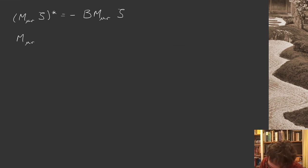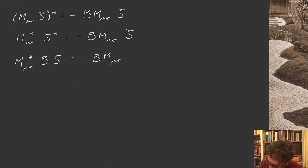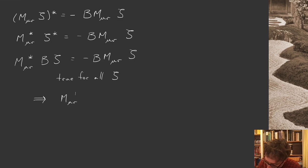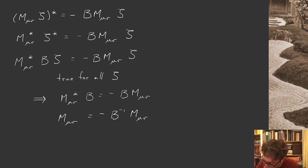Distributing the complex conjugation, M_{μν}* zeta* = −B M_{μν} zeta. Using the Majorana condition on the conjugated spinor, we write M_{μν}* B zeta = −B M_{μν} zeta. Since this has to be true for every spinor, it must hold at the operator level: M_{μν}* B = −B M_{μν}. Rearranging, we get M_{μν} = −B⁻¹ M_{μν}* B. We'll call this the smiley face equation — our second consistency condition.